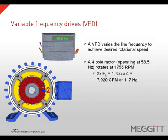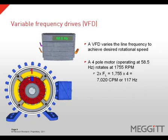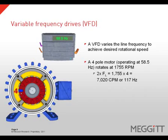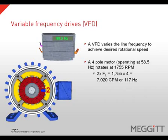With variable frequency drives, the motor speed is controlled by varying the frequency of the applied voltage. The same principle applies in that two-times line frequency vibration is created by the number of poles pulling on a rotor at a given location during a full revolution. A four-pole motor operating at 58.5 hertz rotates at 1,755 RPM. To calculate two-times line frequency, we multiply 1,755 times four poles to get 7,020 CPM or 117 hertz.